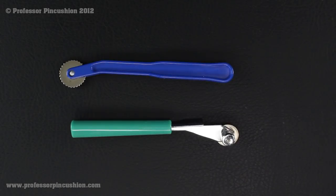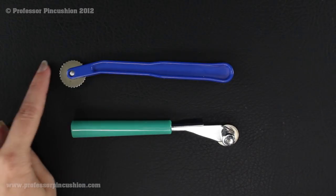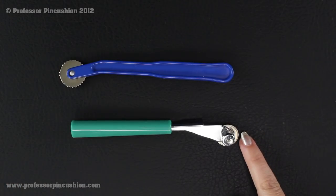Hi and welcome to Professor Pincushion. In this tutorial we're going to talk about the tracing wheel. You can see I have two examples here. I have one with the serrated edge and one with the smooth edge.